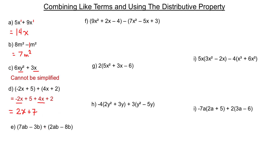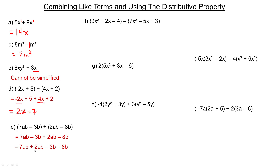In E, we're adding two binomials — there are two terms in each set of brackets. It's the same as writing it without brackets. We have 7ab and 2ab, which are like terms because they have the same variables with the same exponents. And negative 3b and negative 8b are also like terms. Some people like to rewrite it grouping the ab terms together and the b terms together, which is fine.